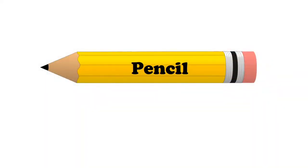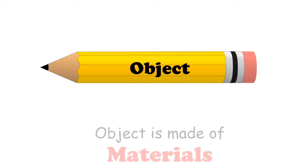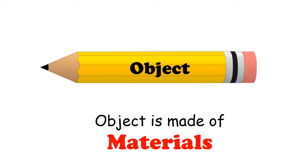This is a pencil. Pencil is an object. Objects are made of materials. Some objects are made of only one material, and others with so many materials. So let us now look at this pencil and find the materials that make the pencil.